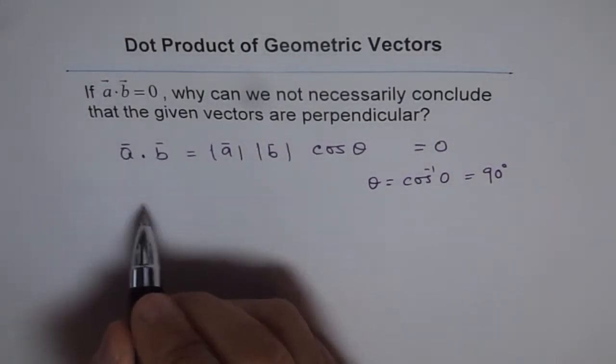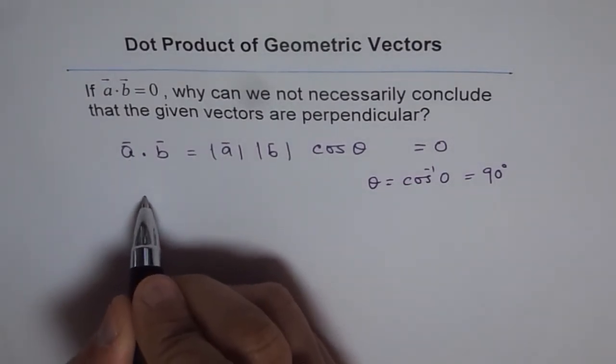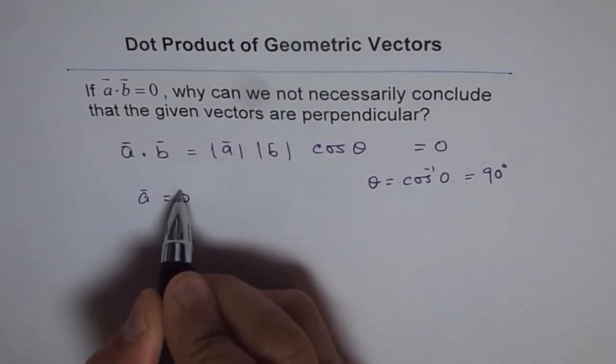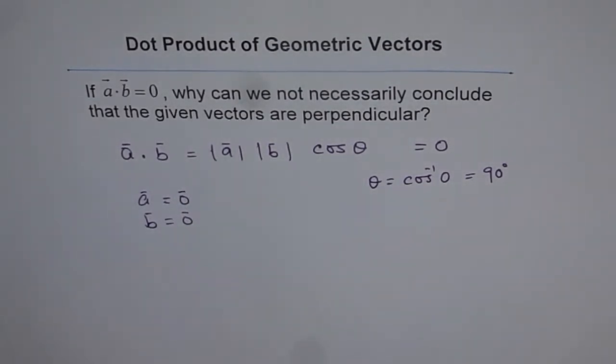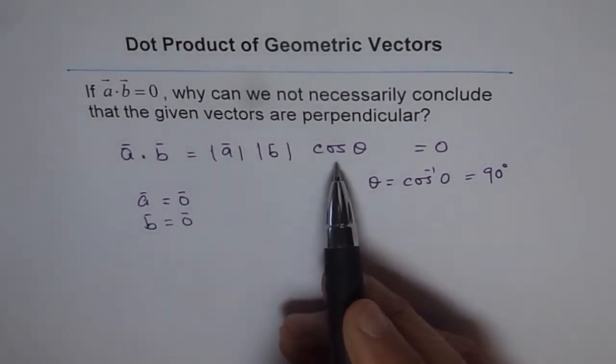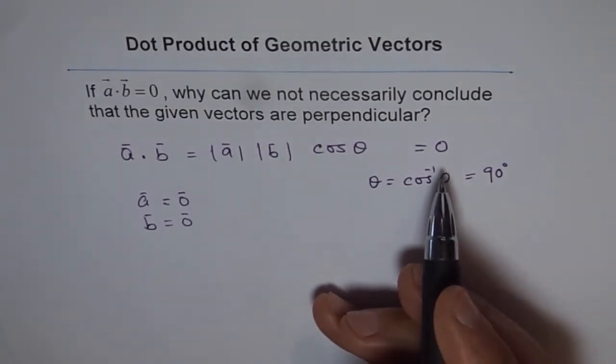So other conditions are A could be 0 vector. How about A being a 0 vector or B being a 0 vector? So in that case, whatever be the angle, you will get 0 as your answer, correct?